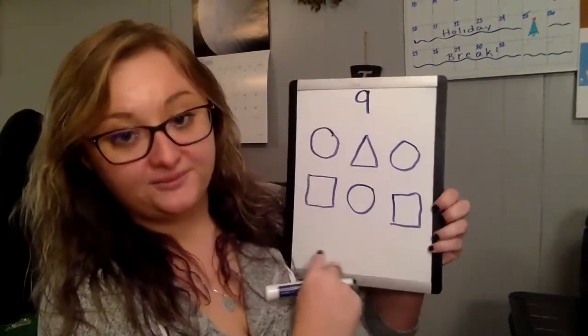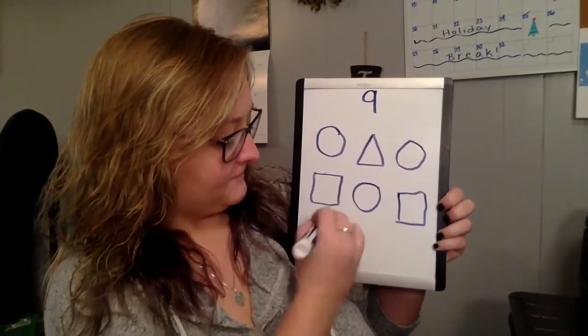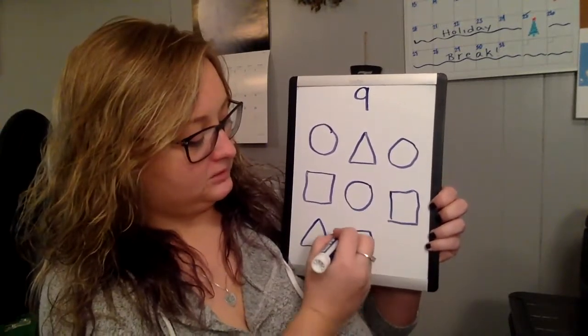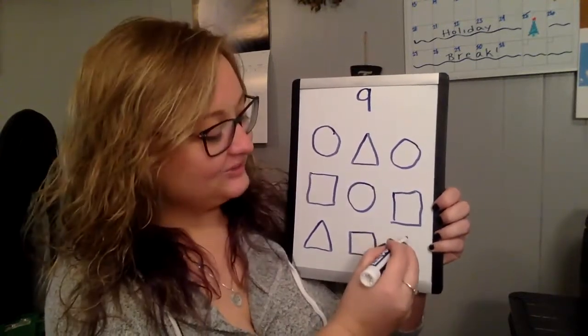We have one more row. Let's start with a triangle. Triangle. Square. What comes next? A triangle.